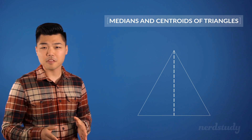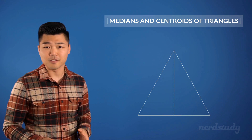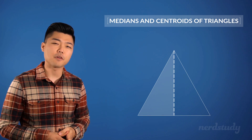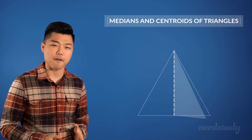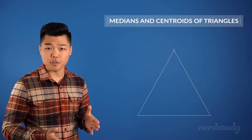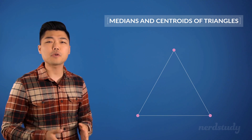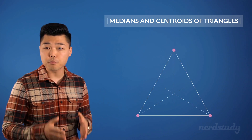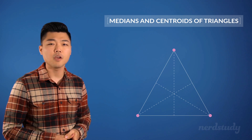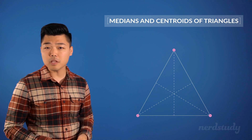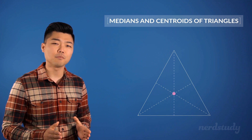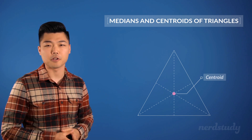One interesting thing about a median is that all medians will divide the triangle's area in half. Since there are three sides and three points, we will always have three medians in a triangle in total. The three medians converge at a single point in the middle known as the centroid.